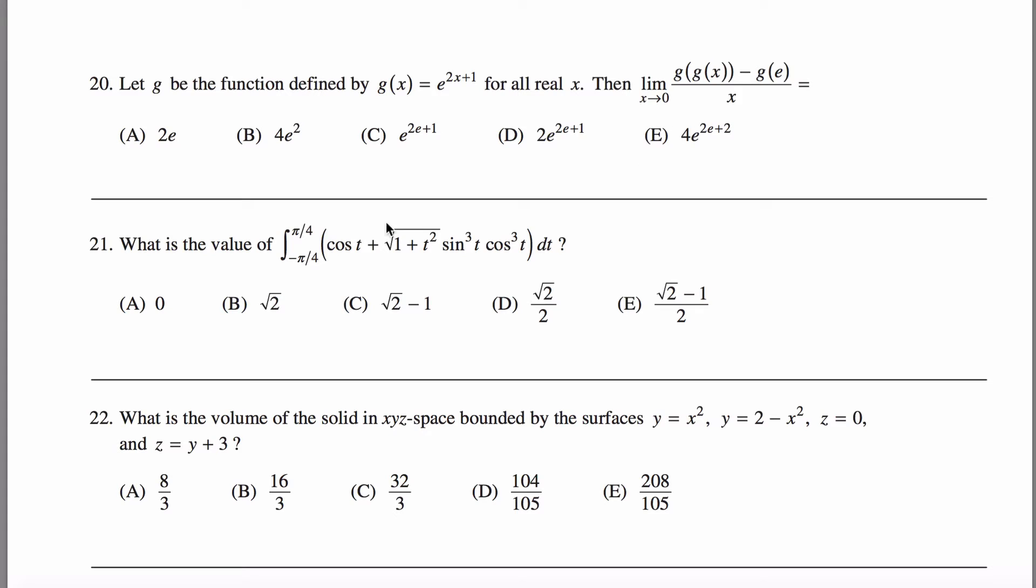Don't believe me? Well, if you try to evaluate this limit by just changing all the x's to zero, what you'll be figuring out is g of g of zero. Well, g of x is this guy, so g of zero is just e to the first power.